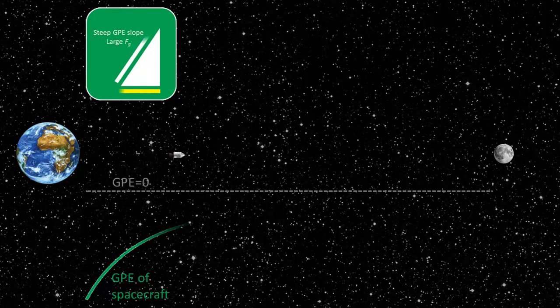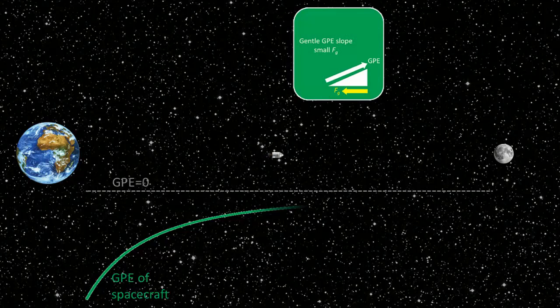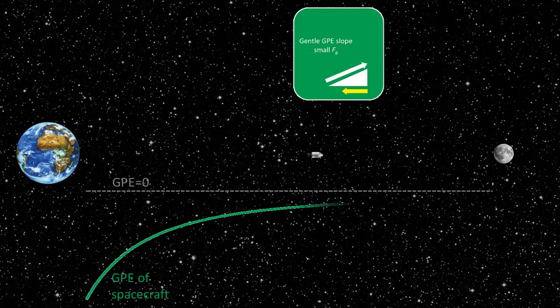This tells us that the spacecraft is experiencing a net gravitational force that's pulling it back towards the Earth. The GPE slope however becomes less and less steep, telling us that the net gravitational force is becoming weaker.